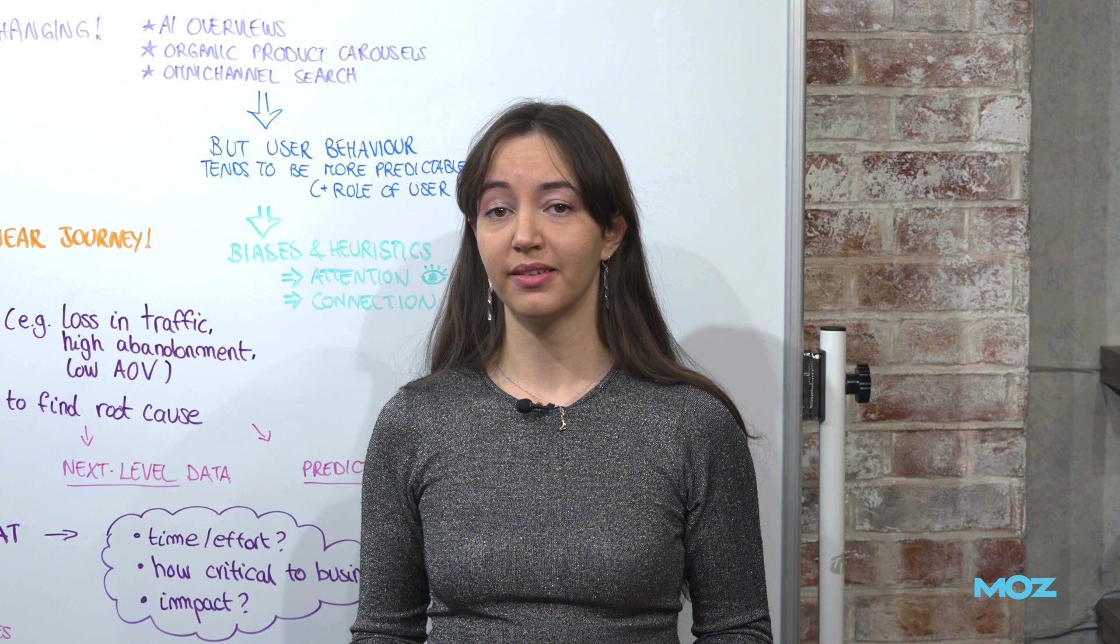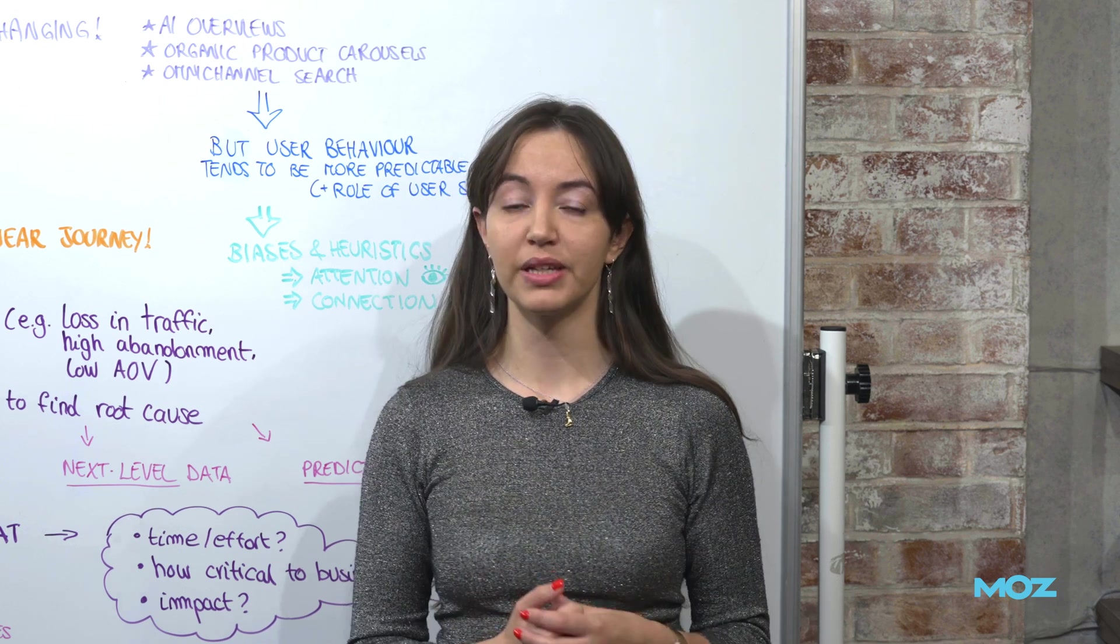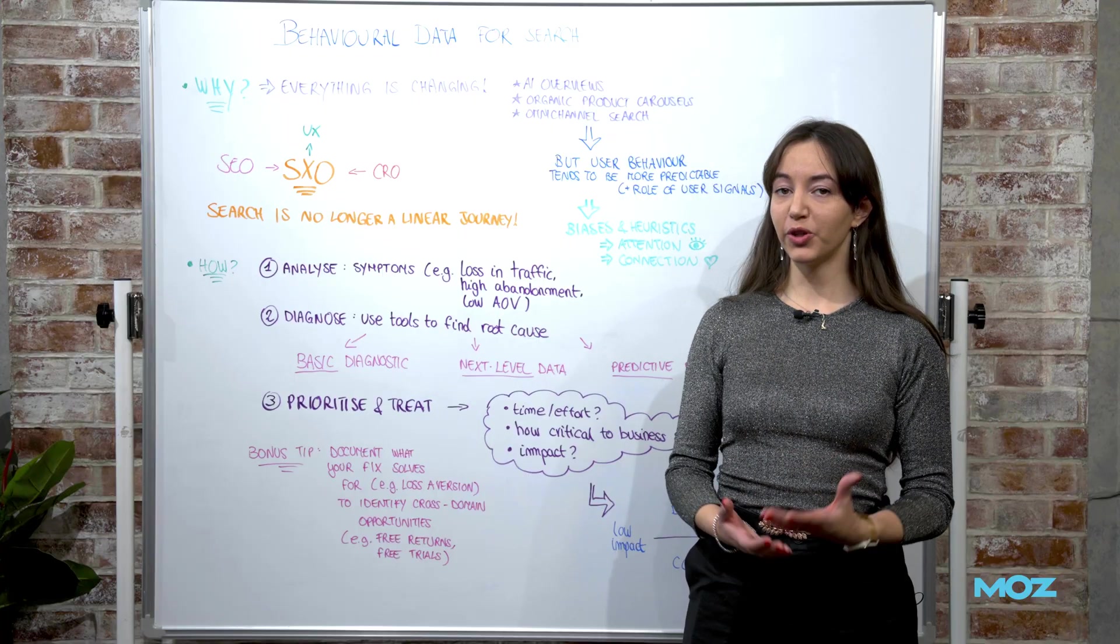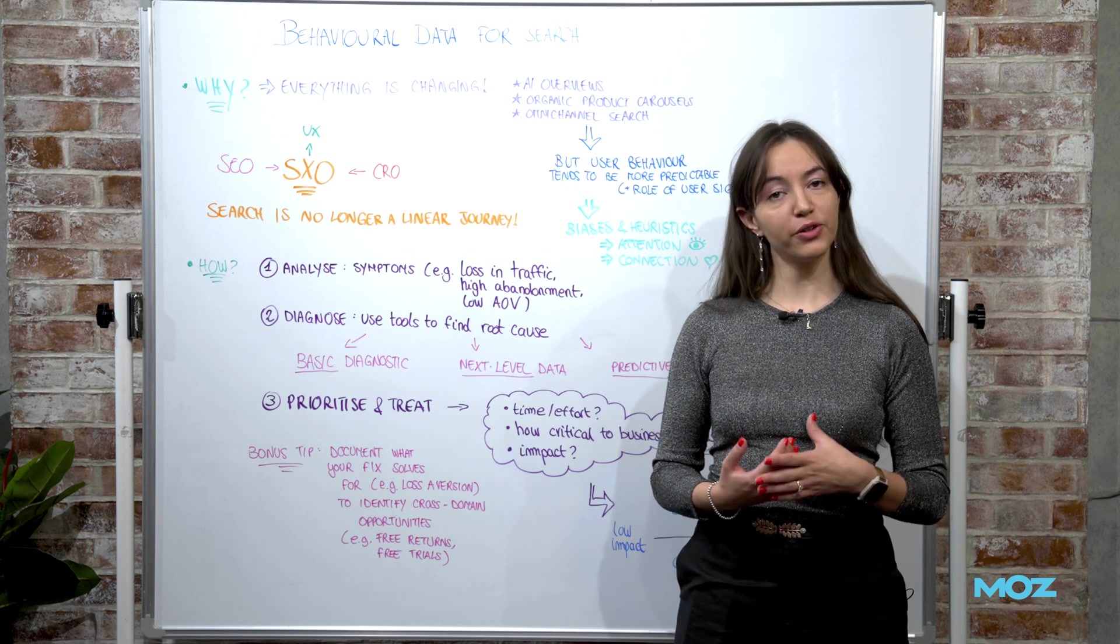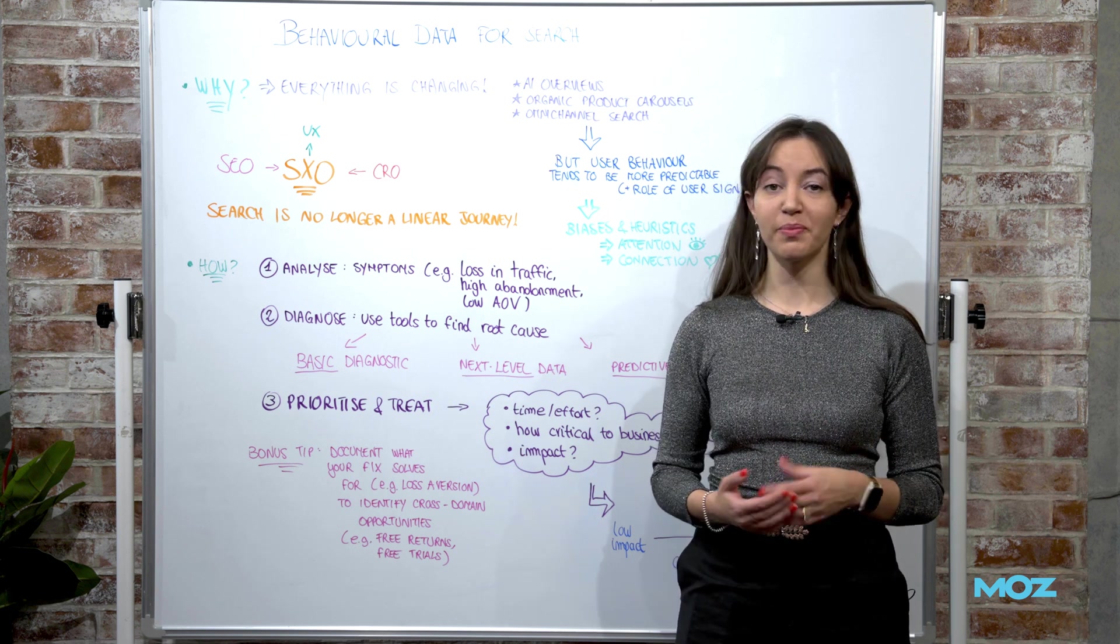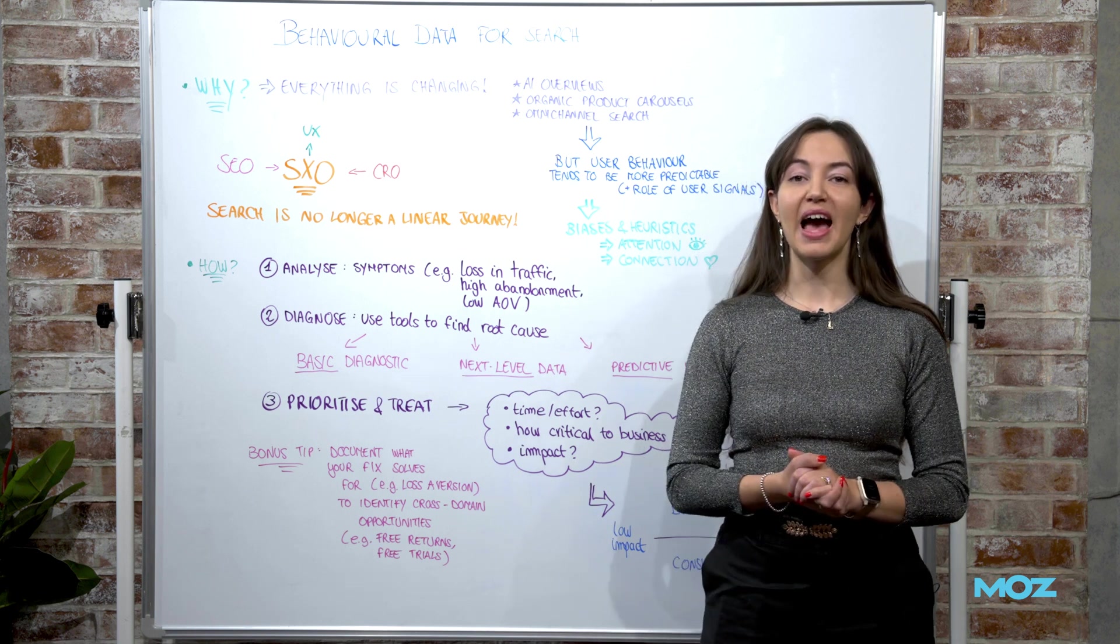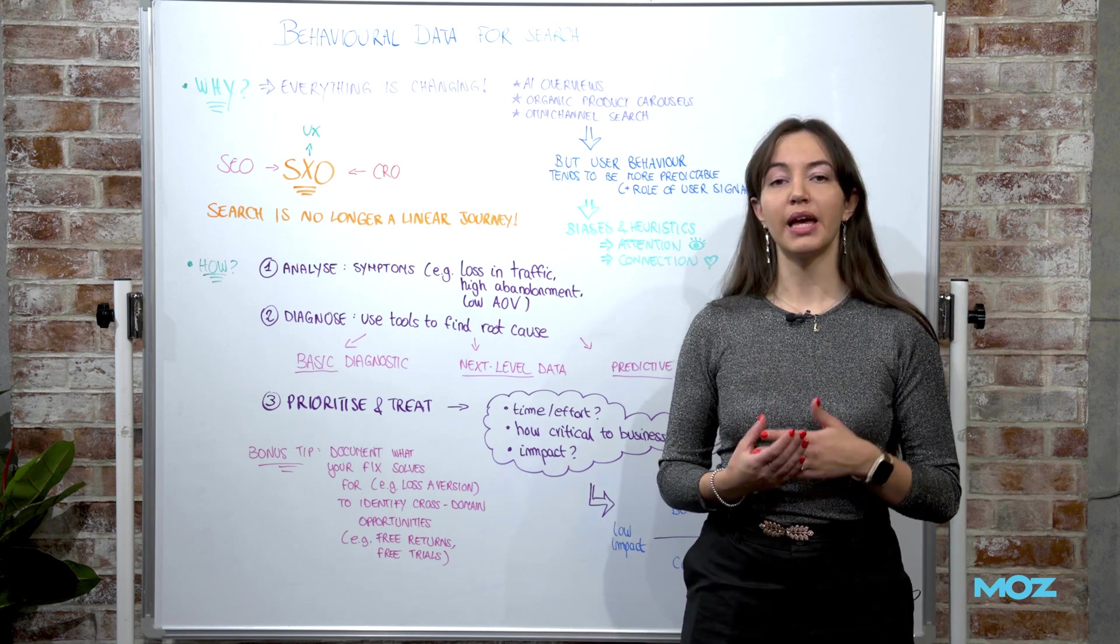So SEO might be dead as we know it but the future of search is analyzing and predicting user behavior so that we can optimize accordingly. And when we talk about users we're talking about people who make decisions all the time and are often biased when doing so. And we're not going to talk about cognitive biases today because it's a massive topic that you can familiarize with on your runtime but it all boils down to two main things that we need to master as SEOs and search professionals.